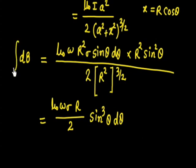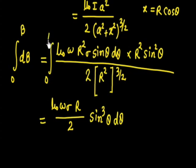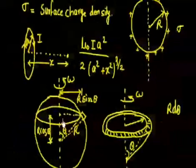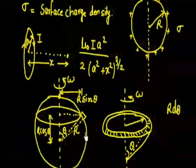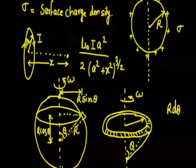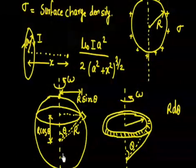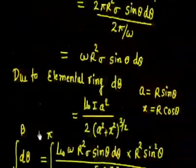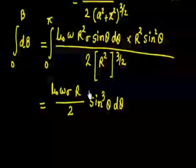To get total B, I integrate both sides. The limits for theta go from 0 to π, covering the full sphere from top to bottom. So B = (μ₀ωσR/2) ∫₀^π sin³θ dθ.